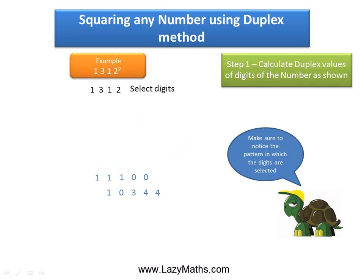The next set of digits that we take are the first two digits, thirteen. Duplex value of 13 is 6 and we write down 06. And then lastly we take the duplex value of the first digit 1 and the duplex value is 1 squared which is 01.